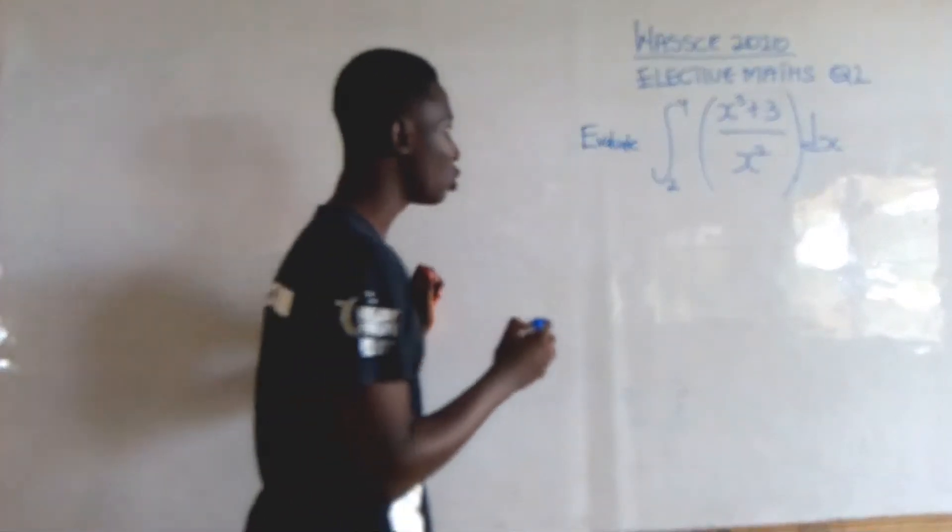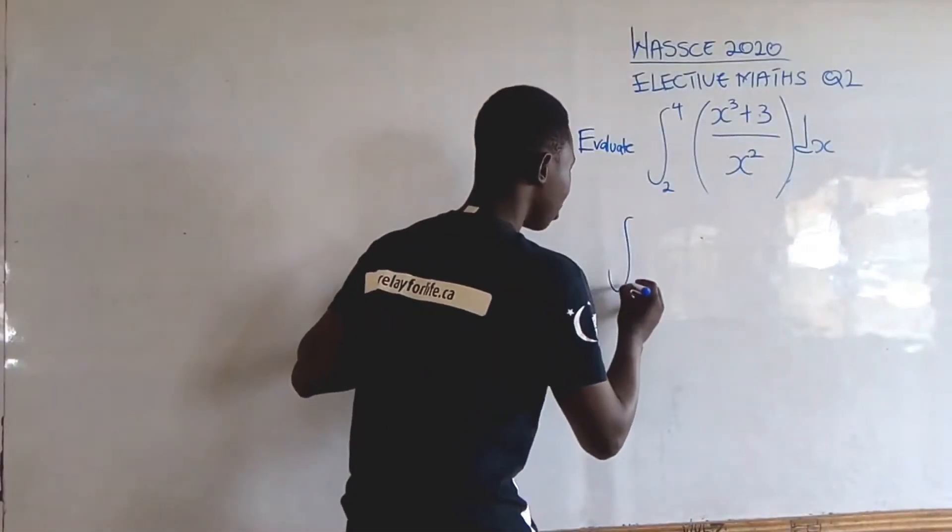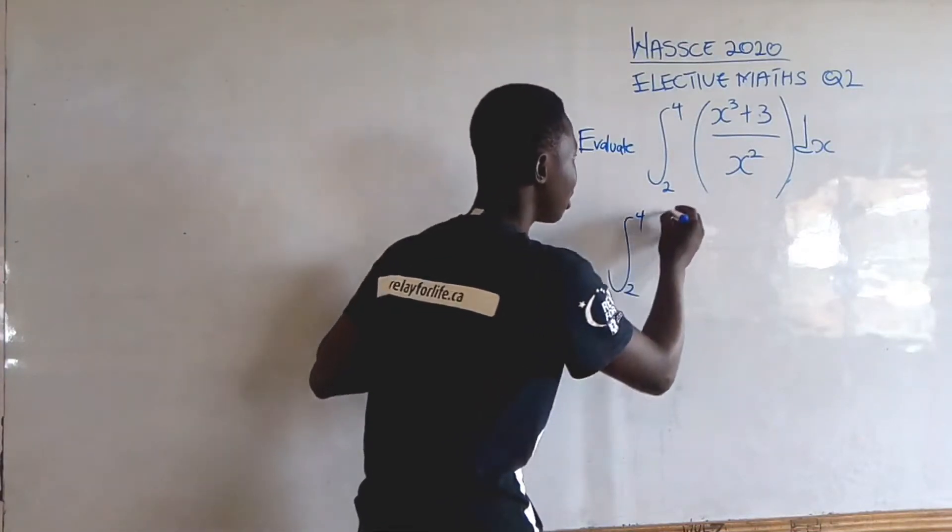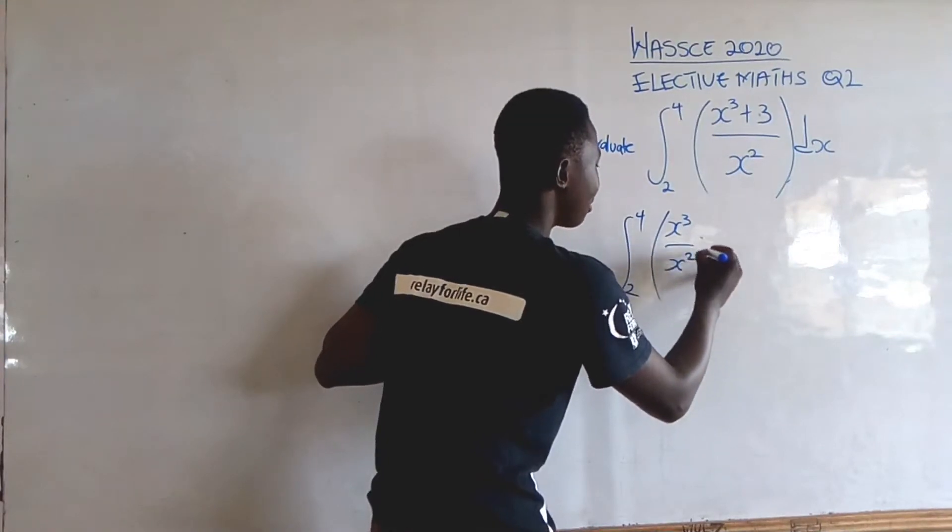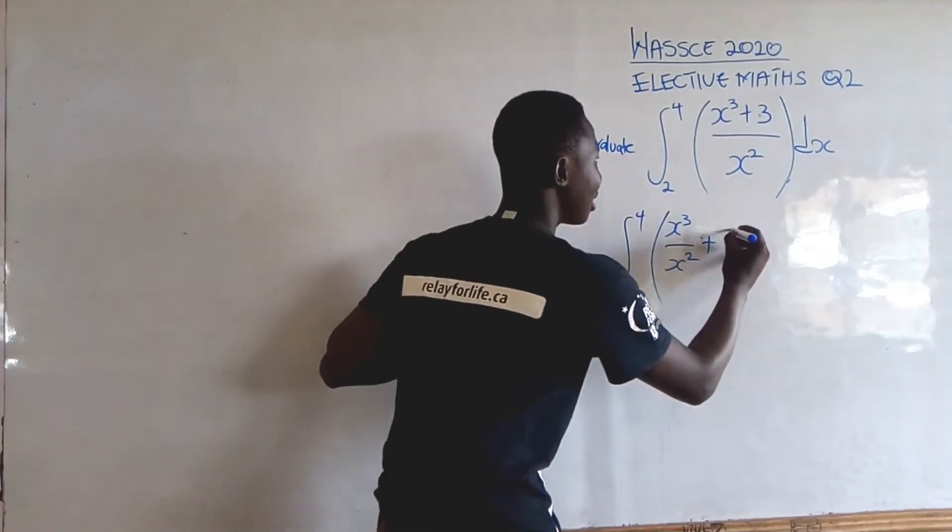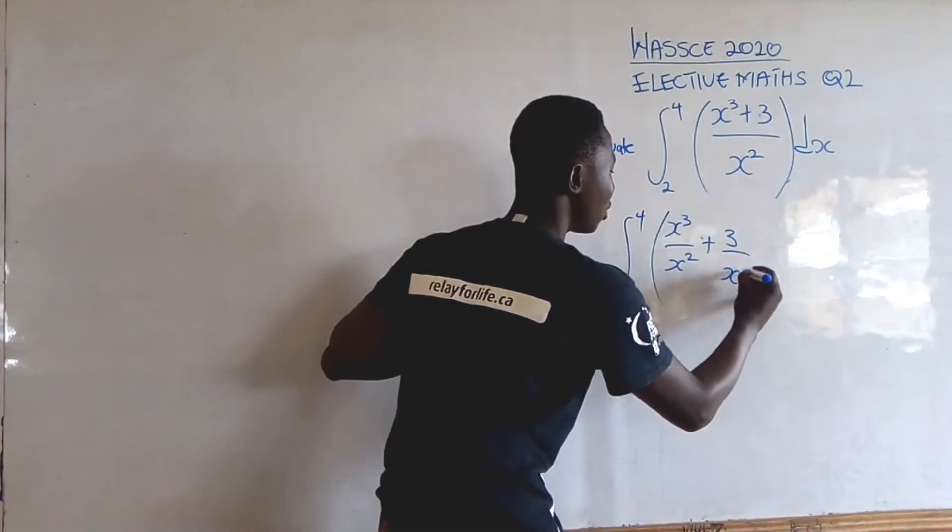By splitting, we are going to get the integral from 2 to 4 of x²/x² plus 3/x².